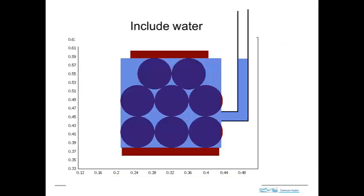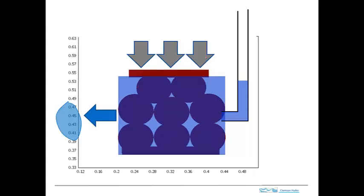Now we include water in the pore space, and we have to recognize that the water is under pressure pushing against the solid material. At the top, the water is pushing up against an imaginary surface, and above that surface is the weight of the entire overburden. The pore pressure is partially supporting the weight of the overburden. When we drop the pressure, that transfers the load that pore pressure was carrying onto the solids, compressing them — just as we saw in the previous slide. When the solids deform, the pore space gets smaller and we release some water from storage.